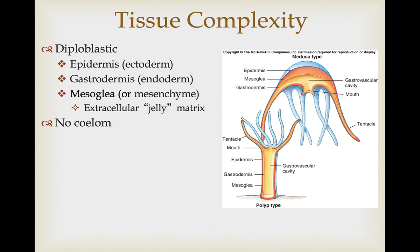As far as tissue complexity, cnidarians are diploblastic—they have an ectoderm, generally called the epidermis, and an endoderm, which makes up the gastrodermis. In between, instead of mesoderm, they have an extracellular jelly matrix similar to the mesohyl of sponges—in this case called mesoglia or mesenchyme. There is no body cavity, no coelom.